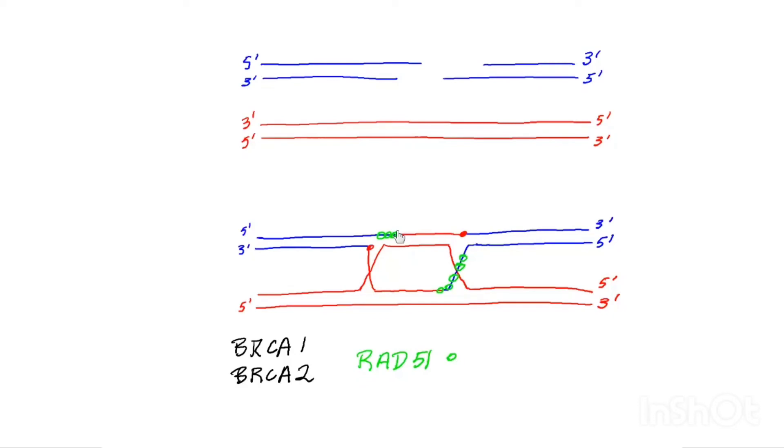They facilitate strand invasion and formation of the D loop. BRCA1 and BRCA2 work together to load RAD51 onto the protruding three prime overhangs.